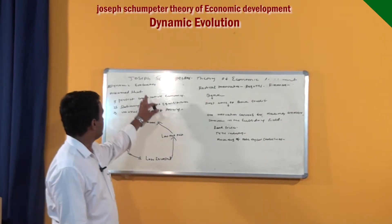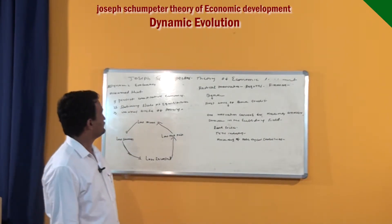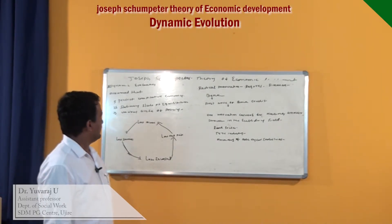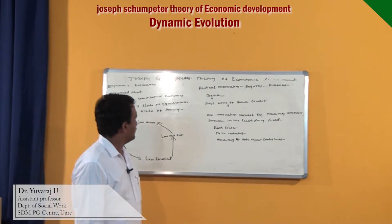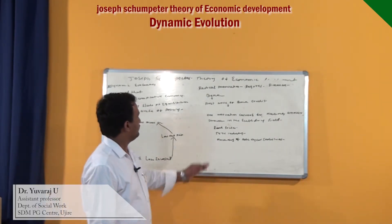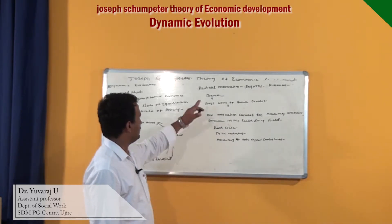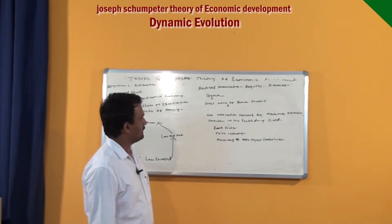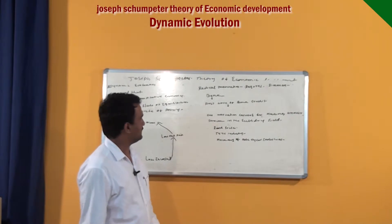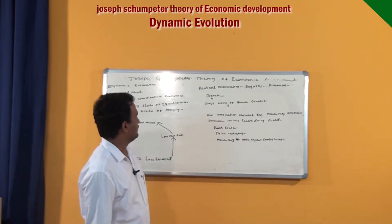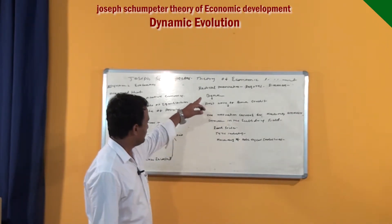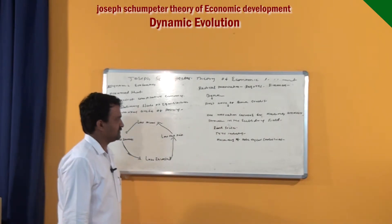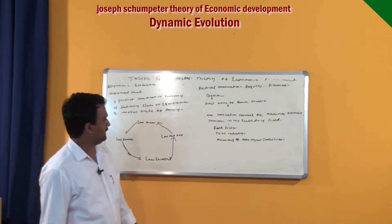Dear students, continuing from the earlier class on Joseph Schumpeter's theory of economic development. Last class I discussed the first wave of bank credit, where entrepreneurs making radical innovations needed financial assistance and received it from the banks — that is called the first wave of bank credit.